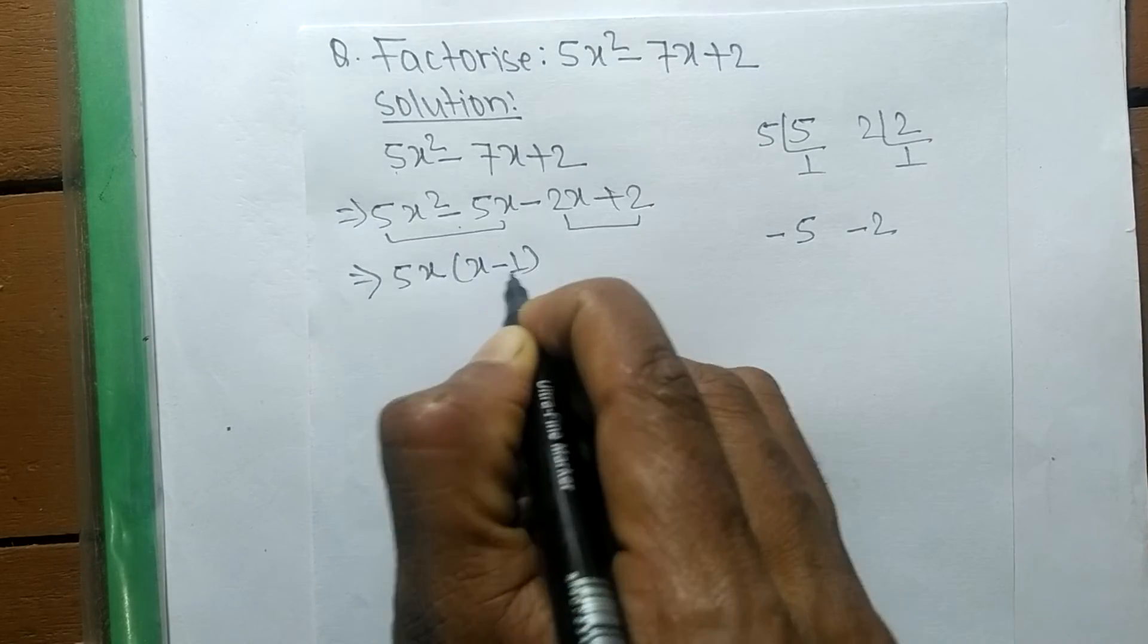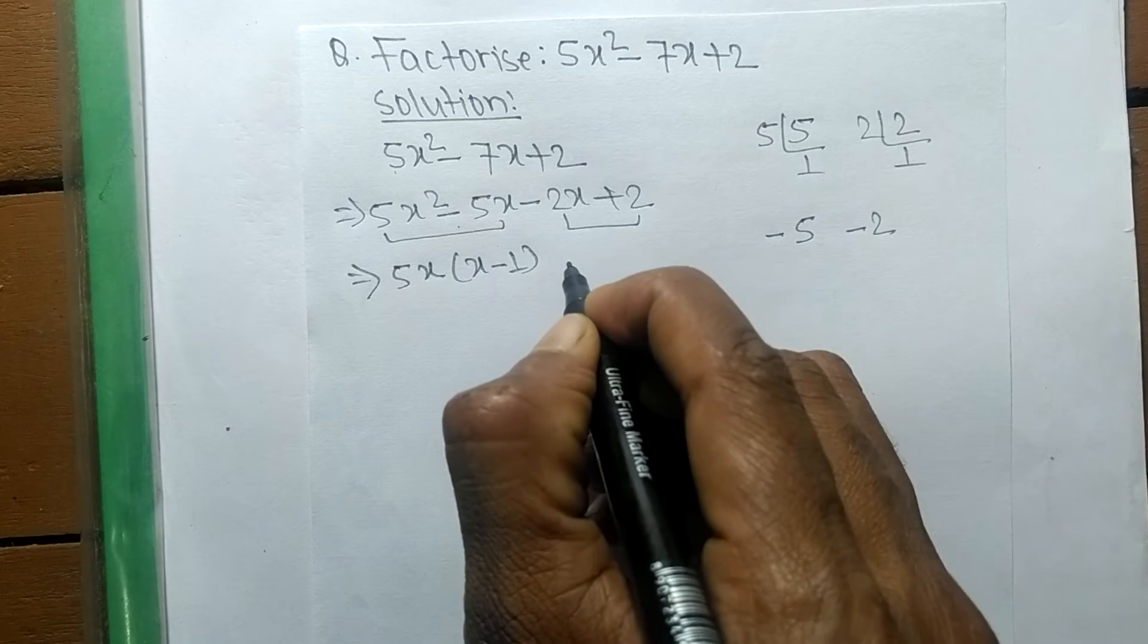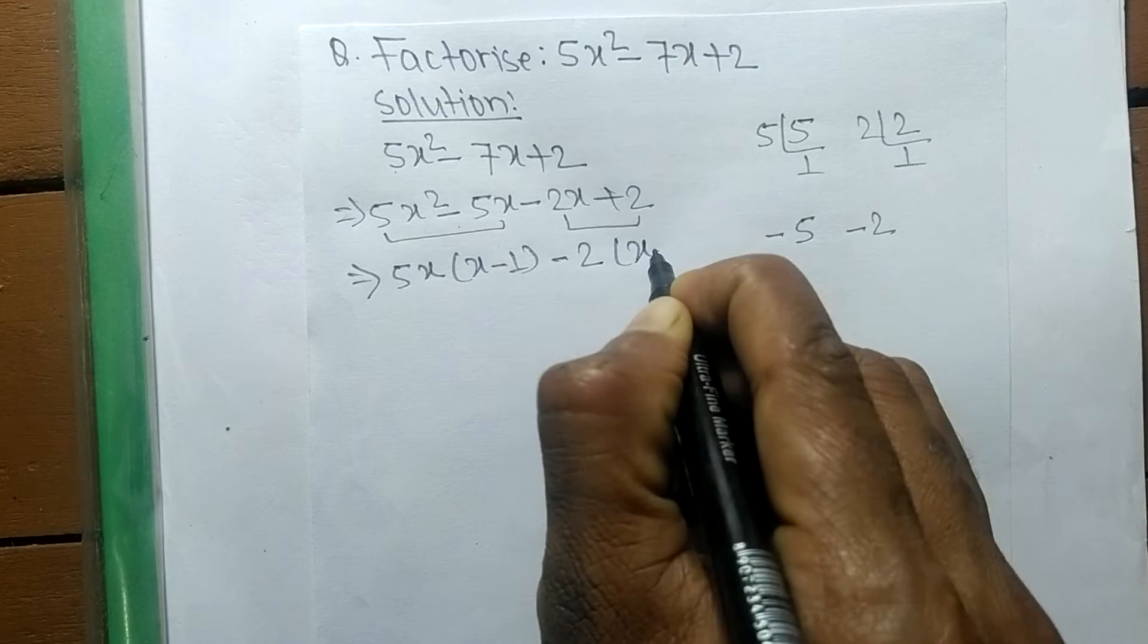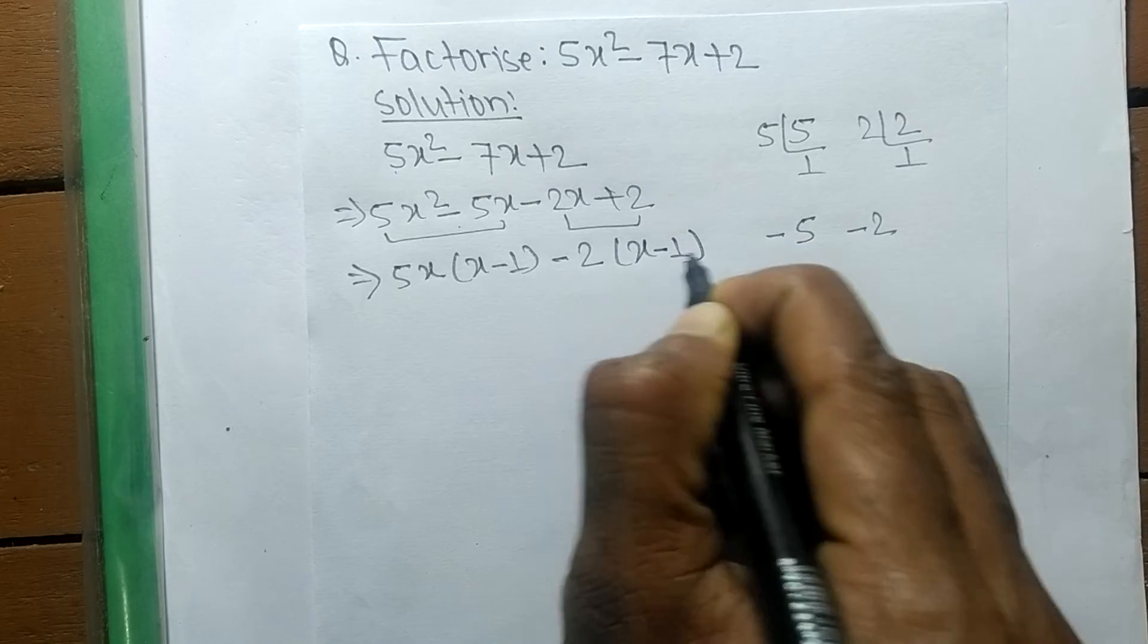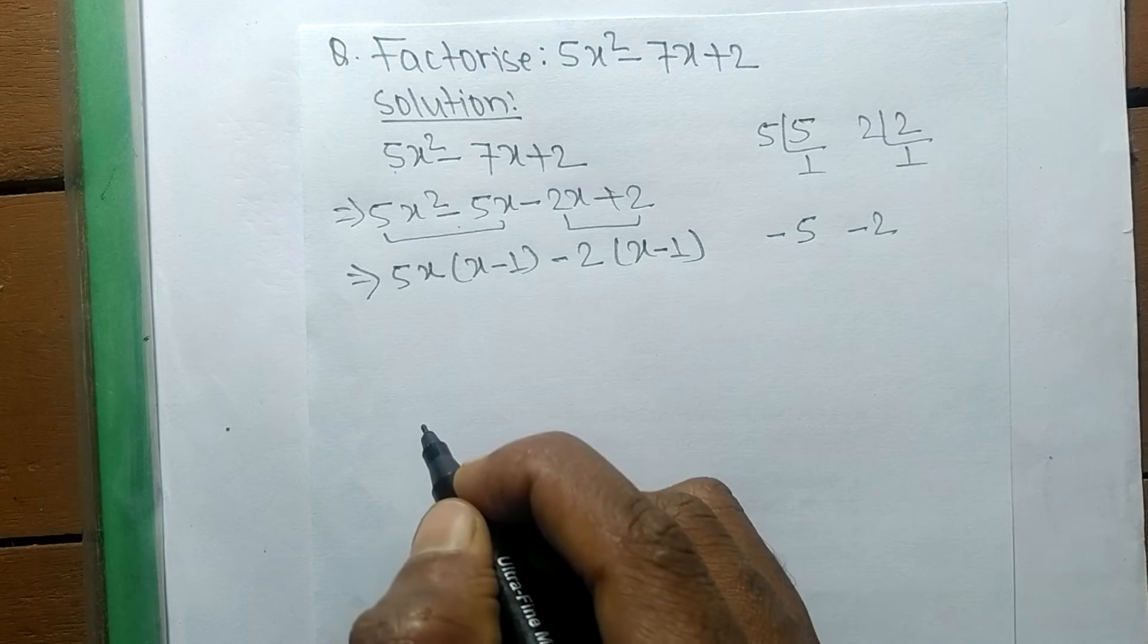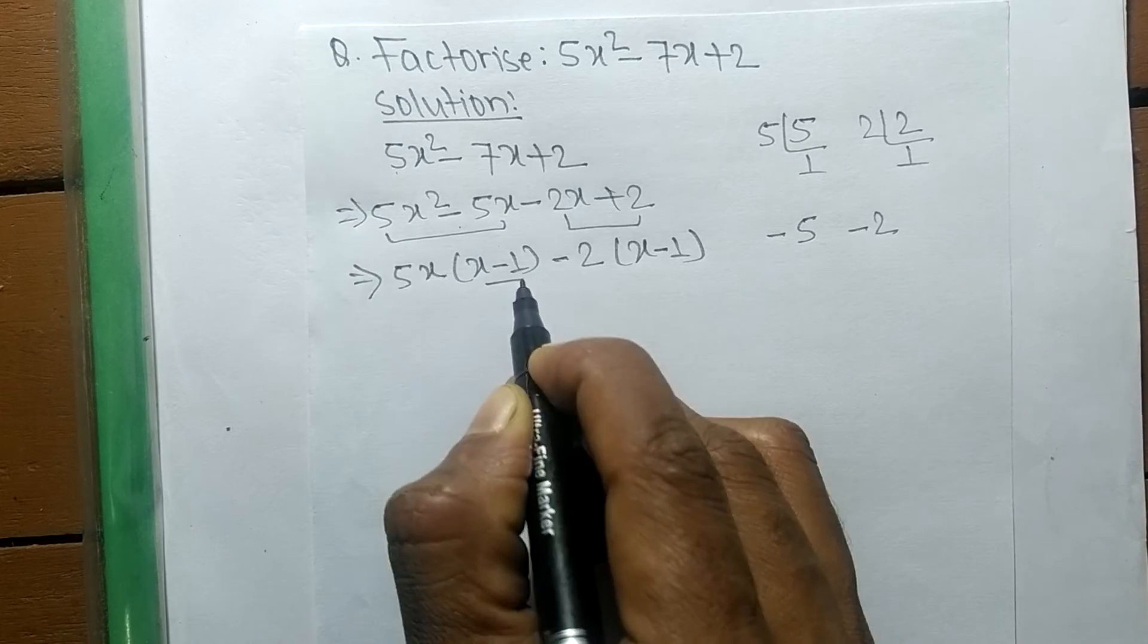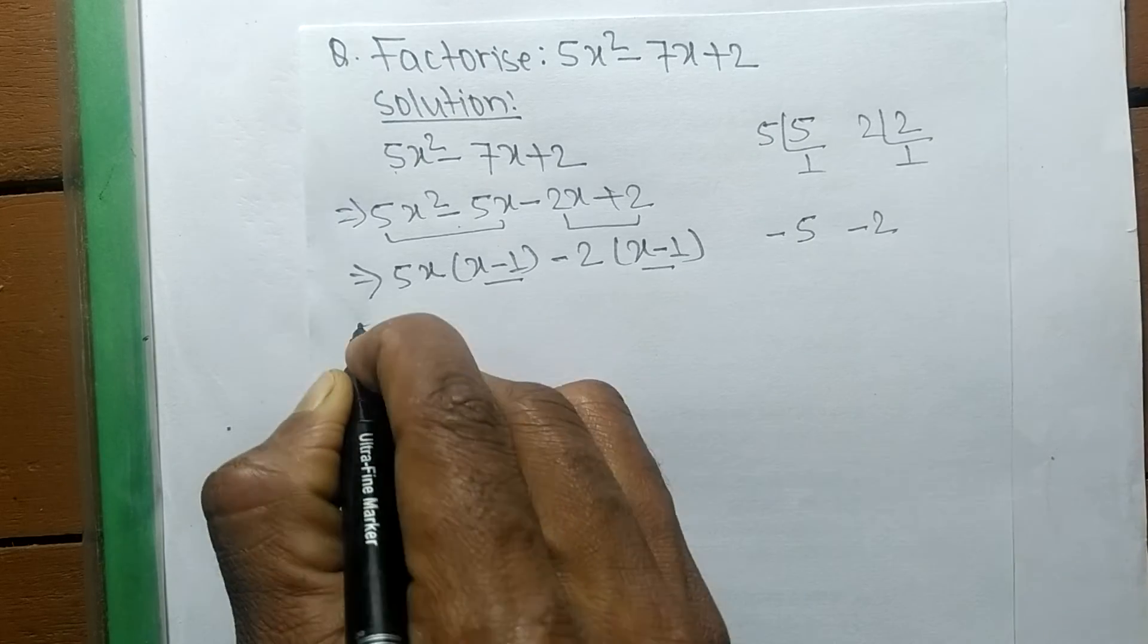In the second pair the common is minus 2, so here also the remaining part is x minus 1. As you look here closely, these both expressions contain x minus 1.